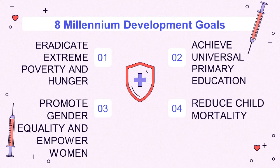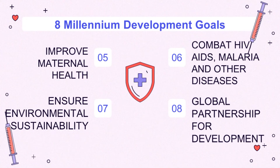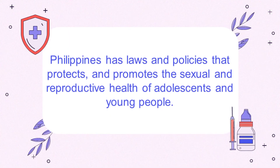The eight Millennium Development Goals are: 1. Eradicate extreme poverty and hunger. 2. Achieve universal primary education. 3. Promote gender equality and empower women. 4. Reduce child mortality. 5. Improve maternal health. 6. Combat HIV/AIDS, malaria, and other diseases. 7. Ensure environmental sustainability. 8. Global partnership for development. We are lucky because here in our country we have laws and policies that protect and promote the sexual and reproductive health of adolescents and young people.